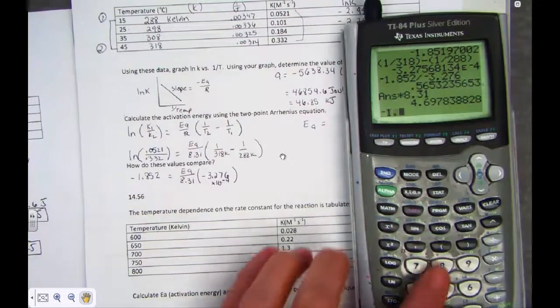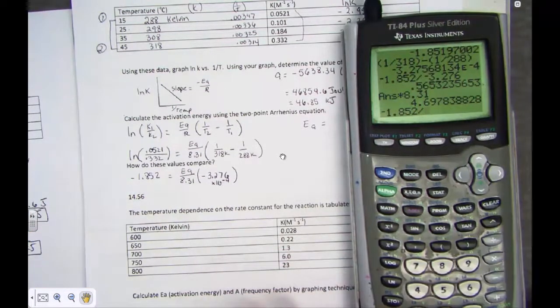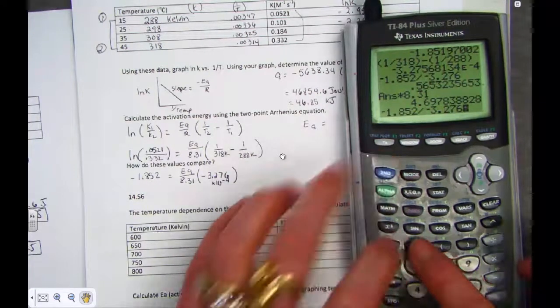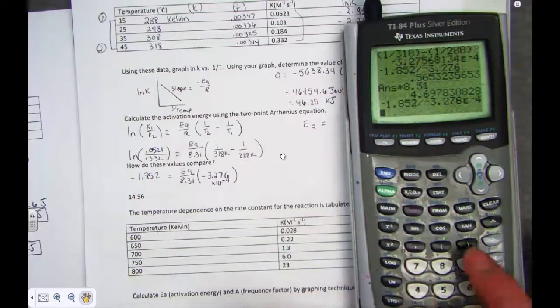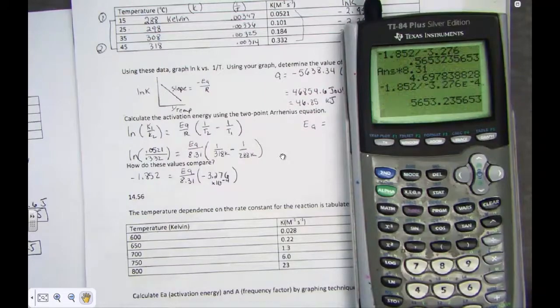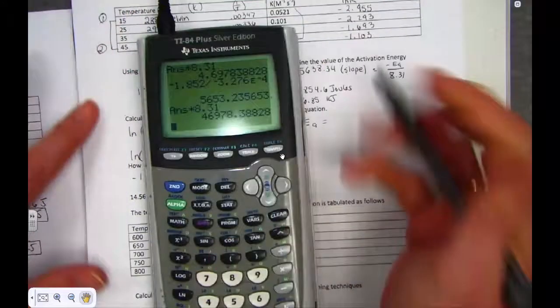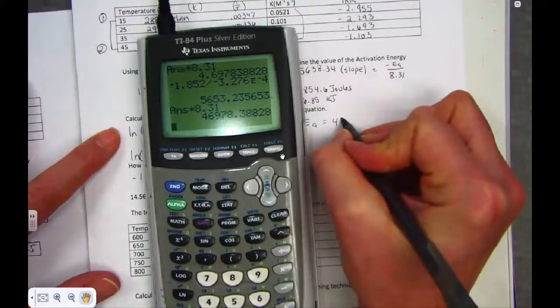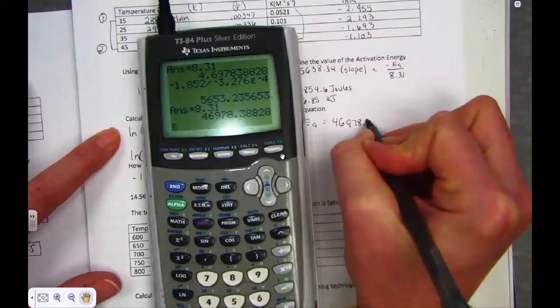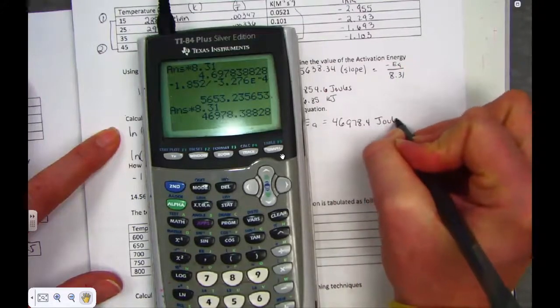So, negative 1.852 divided by negative 3.276 times 10 to the negative 4th. There's the corrected value times 8.31. And presto. Thank goodness. 46978.4 joules.